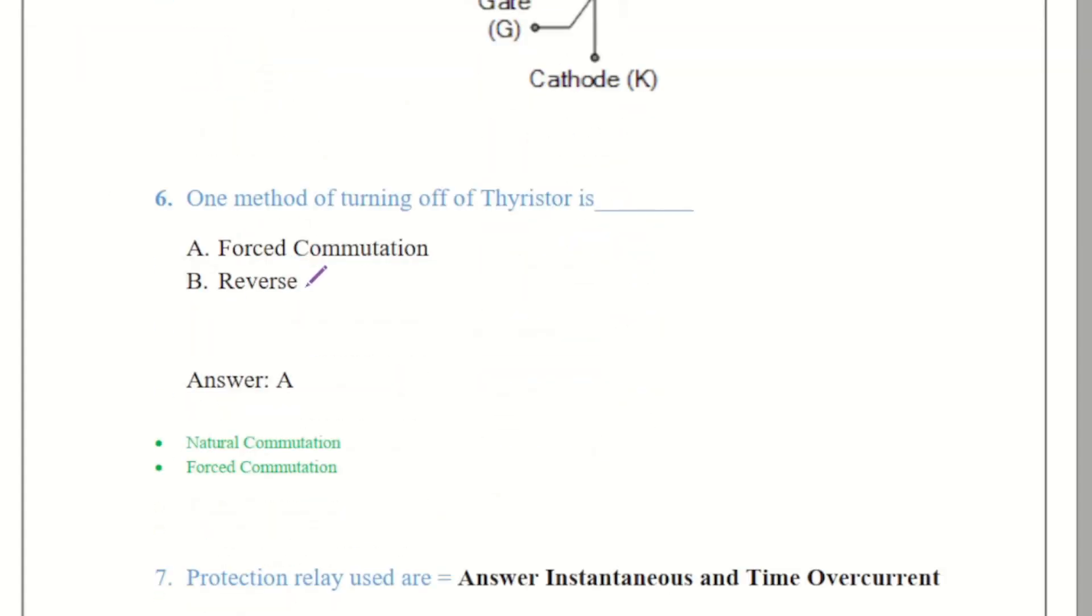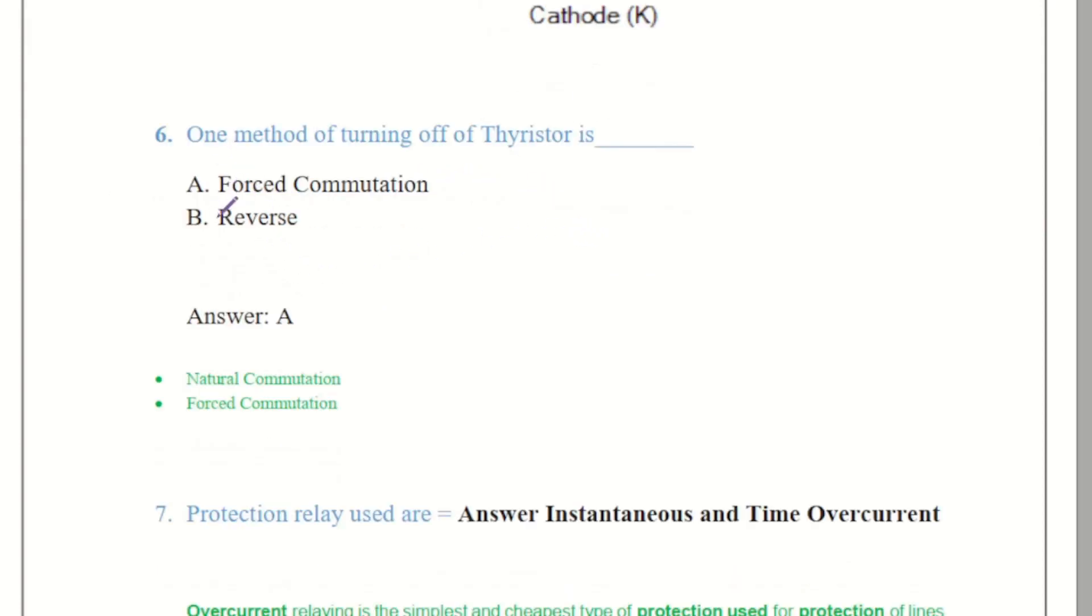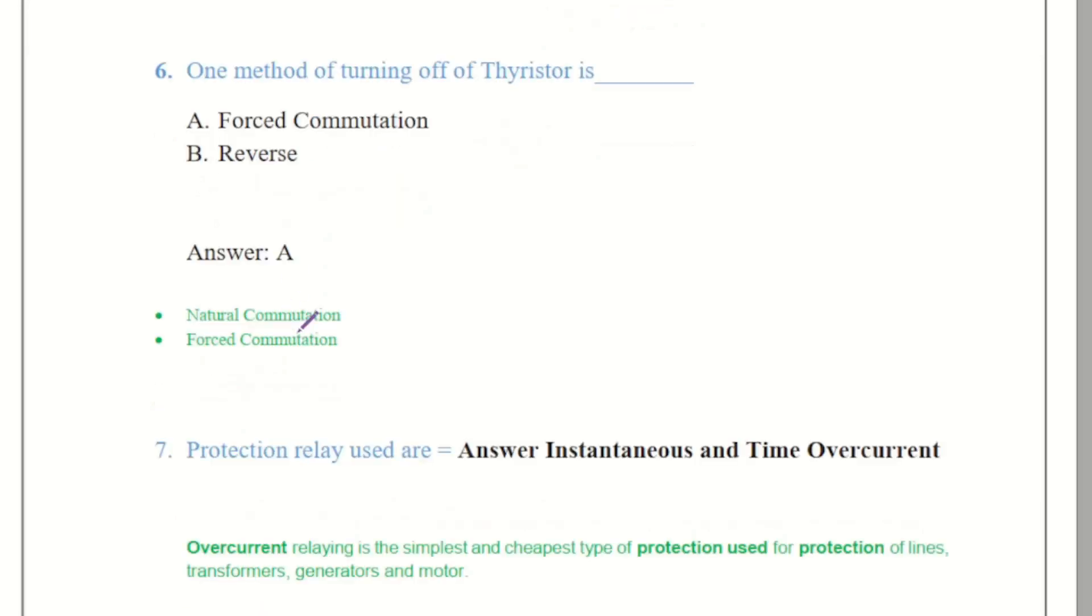Question number 6 comes over here that is one method of turning off of thyristor is. So we have to select these two options over here force commutation and the reverse. Force commutation and the reverse there are basically two different turning off methods of thyristor natural commutation and the force commutation. So the answer is A force commutation obviously.